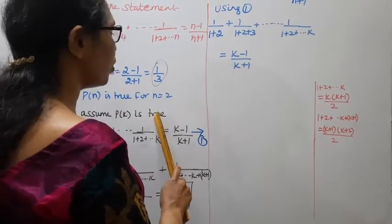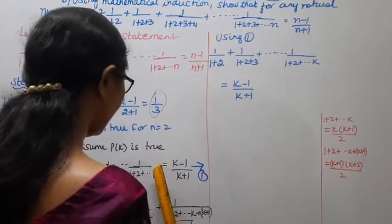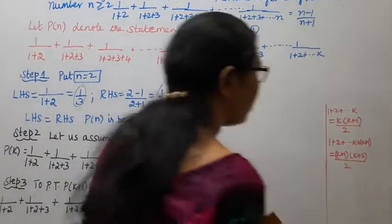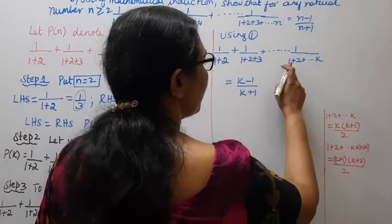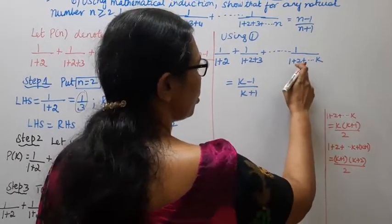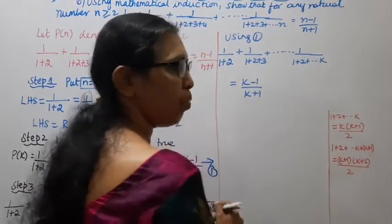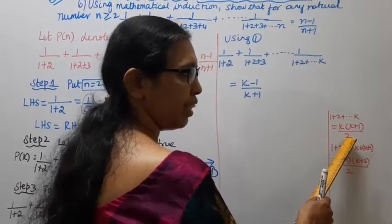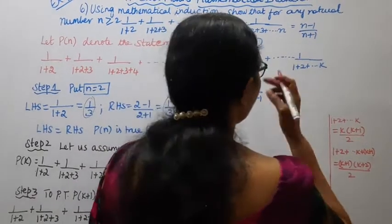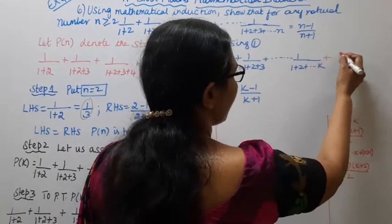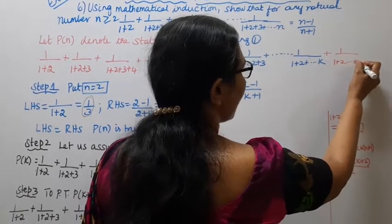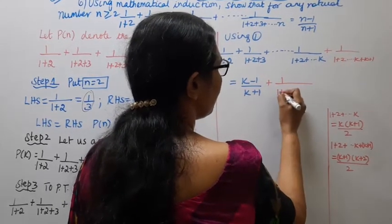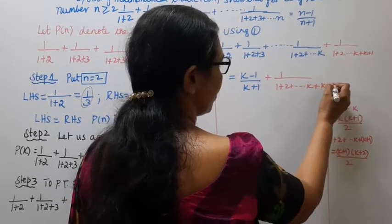Using P(k) is true, add the next term on both sides. The sum 1+2+...+n has formula n(n+1)/2. So for P(k+1), the LHS becomes: 1/(1+2) + ... + 1/(1+2+...+k) + 1/(1+2+...+k+(k+1)).